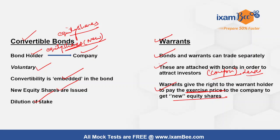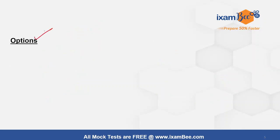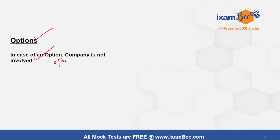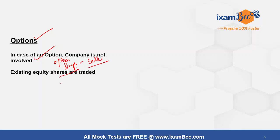Options give the option holder the right, but not the obligation, to buy the underlying shares at an exercise price at the maturity date. In this case, the company is not involved — there are two parties: the option buyer and the option seller. There is an agreement between these two parties, and existing equity shares are traded.